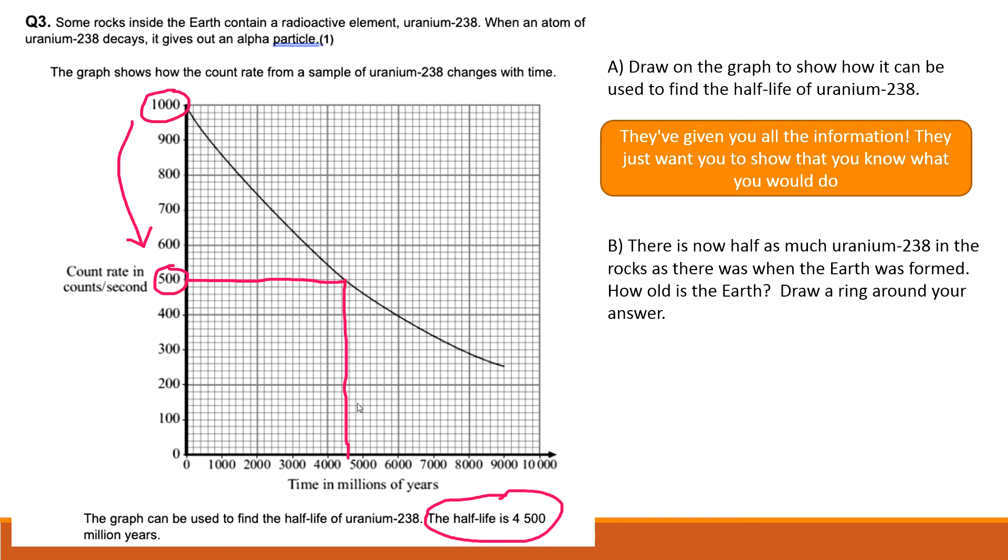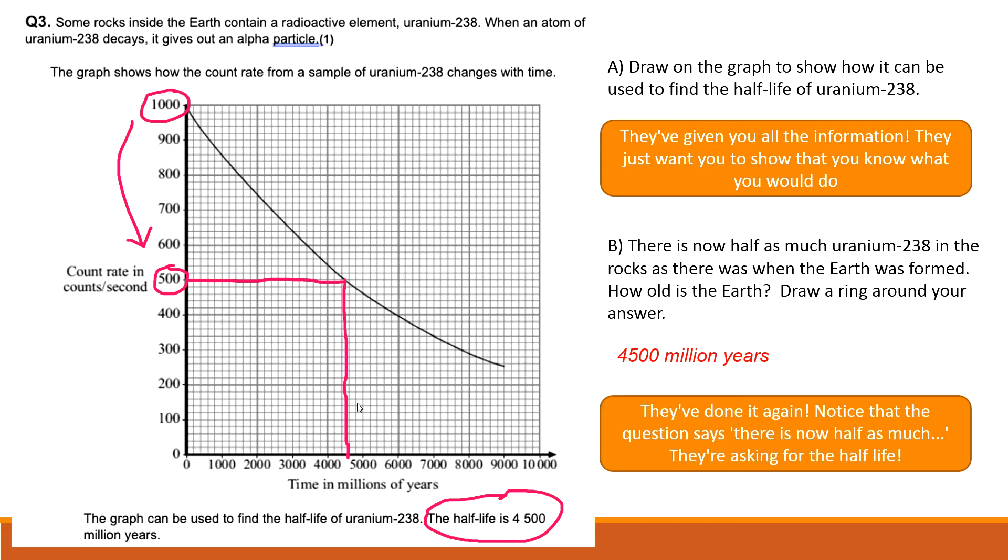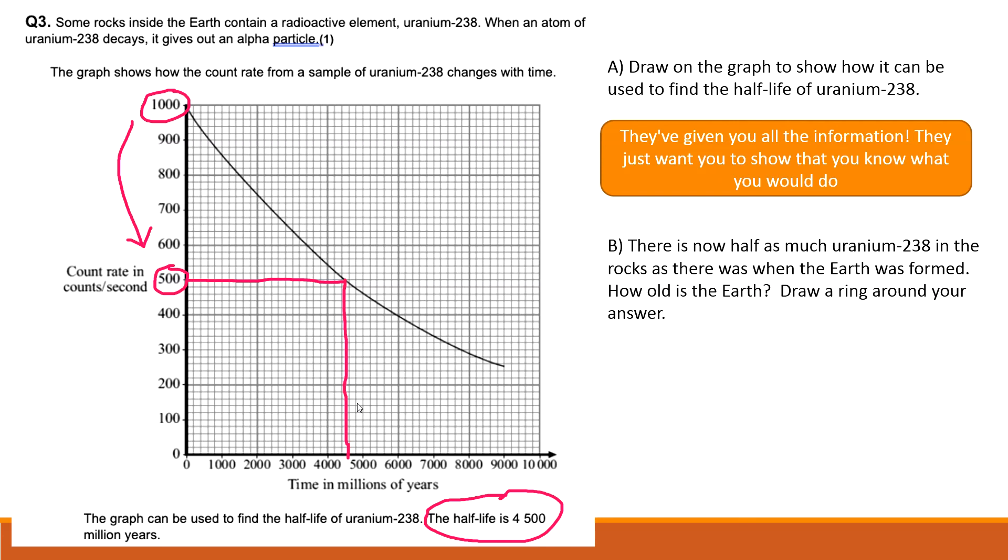There isn't now half as much uranium-238 in the rocks as there was when the earth was formed. How old is the earth? Draw a ring around your answer. So the answer to that one, I mean you don't even need the answers to see it. If there is half the amount of uranium-238 in the world, it means that half of it must have decayed, so one half-life of time must have expired, which is the same number again, which is 4,500 million years or 4.5 billion years.